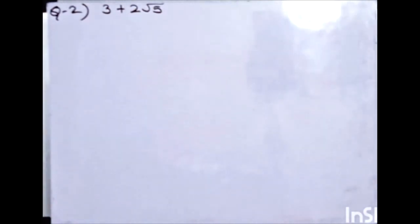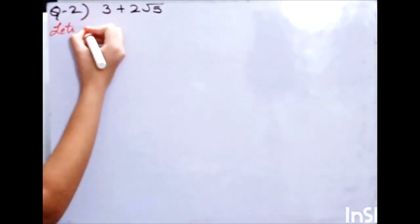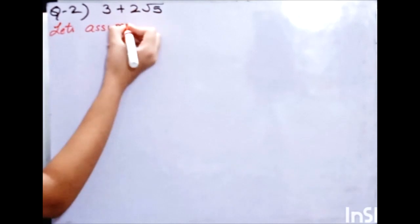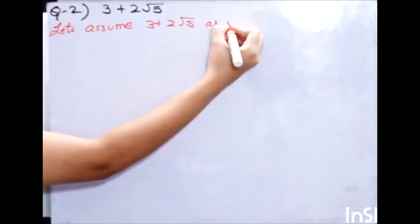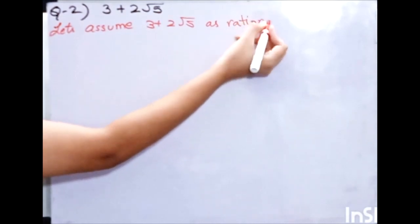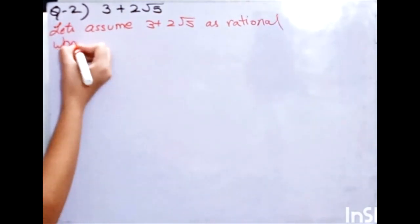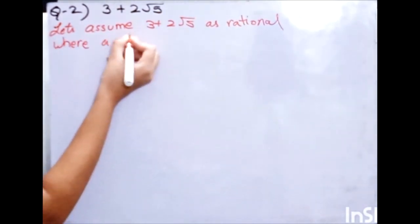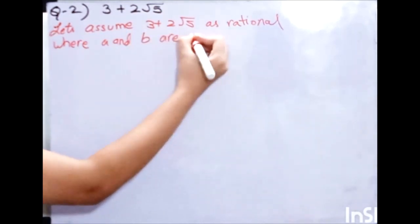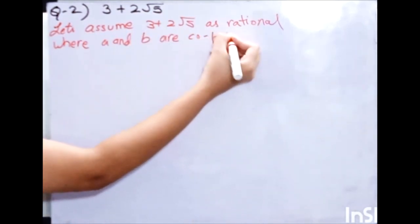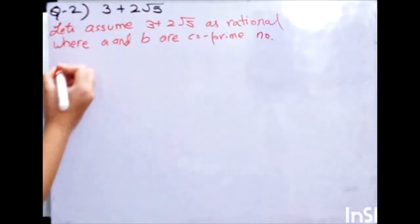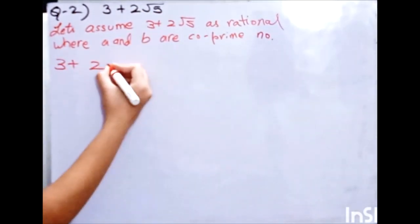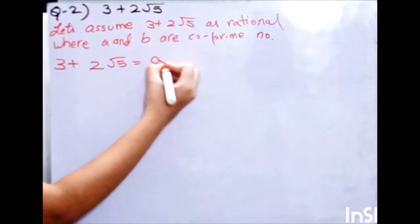This method seems to be the same. First what we will do is, let's assume 3 plus 2 root 5 is rational where a and b are co-prime numbers. This is the first line. What we will do is, you will write it like 3 plus 2 root 5 equals to a upon b.